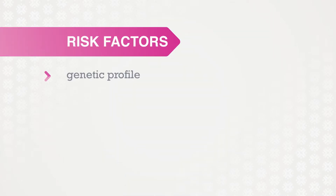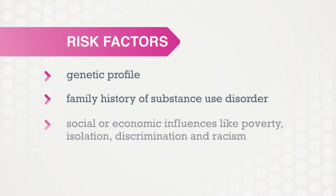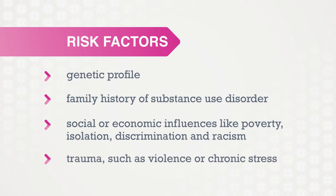The risk of developing problematic substance use or a substance use disorder varies from person to person and can be influenced by a number of complex factors. These factors include a person's genetic profile, family history of substance use disorder, social or economic influences such as poverty, isolation, discrimination and racism, and trauma such as violence or chronic stress, especially at an early age. It is important to note that just because someone has risk factors, this does not mean they will develop a substance use disorder — these factors can simply increase their risk.